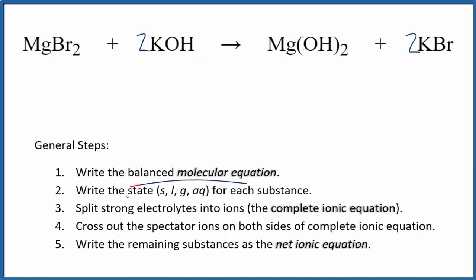Now we write the state for each substance. That looks like this. Compounds with the bromide ion here, they're very soluble. And potassium hydroxide, this is a strong base, so it's going to be soluble.